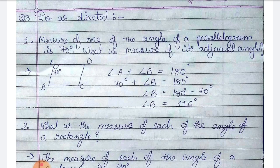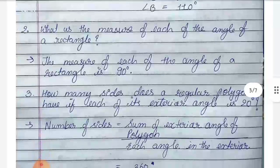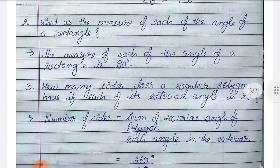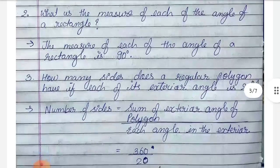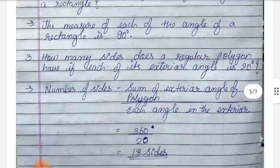Number 2: what is the measure of each of the angles of a rectangle? The measure of each angle of a rectangle is 90 degrees.